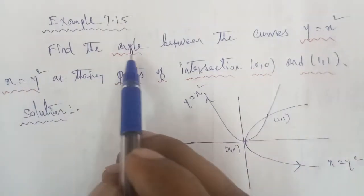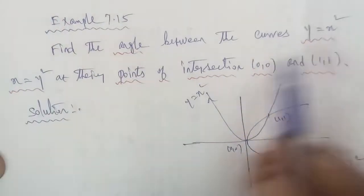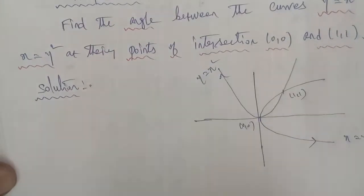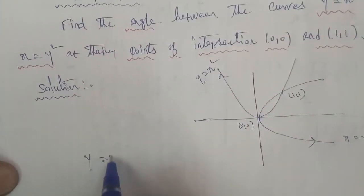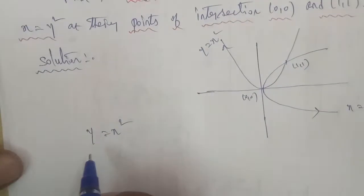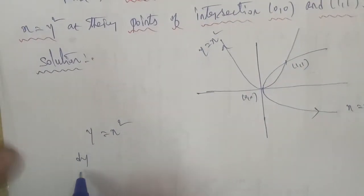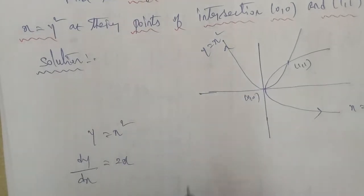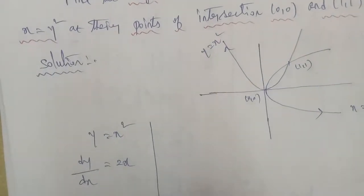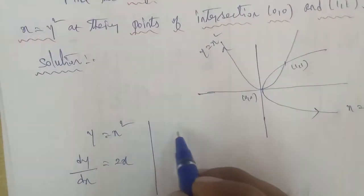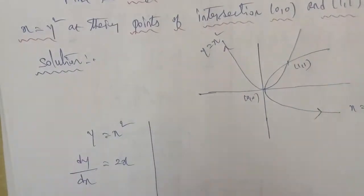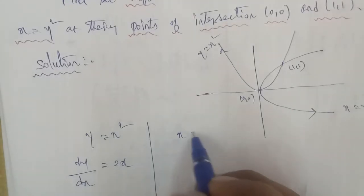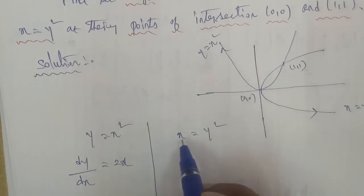Now we have to find the angle. Given two curves, we differentiate them. First, for y is equal to x square, differentiate with respect to x. So dy by dx for x square gives us 2x. For x equal to y square, differentiate with respect to x.